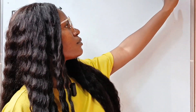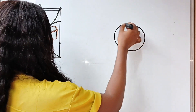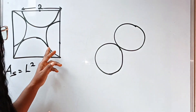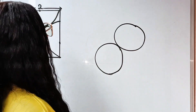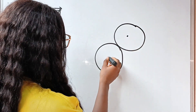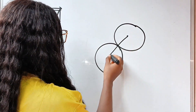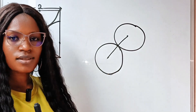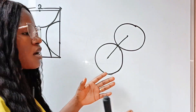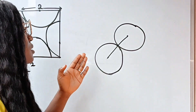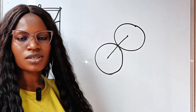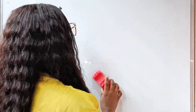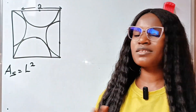Remember this theorem: when two circles meet each other externally or internally, and you join the two centers with a straight line, this straight line will pass through their point of contact. In other words, when two circles meet each other externally or internally, their centers and the point of contact lie on a straight line. That is the summary of this theorem, and it is the only savior we have.